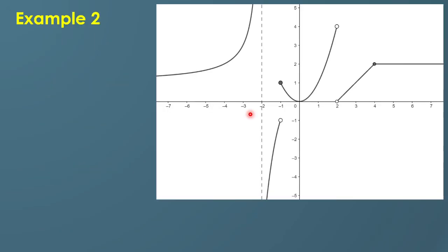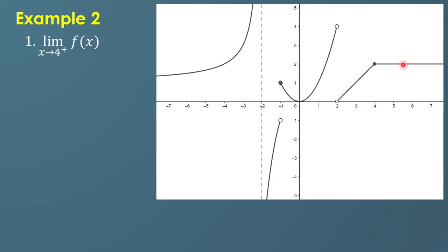Let's consider another graph. As you can see, we have vertical asymptotes, gaps, and holes. For the limit of f of x as x approaches 4 from the right, this is x equals 4, and in reference to this graph the y value is 2.